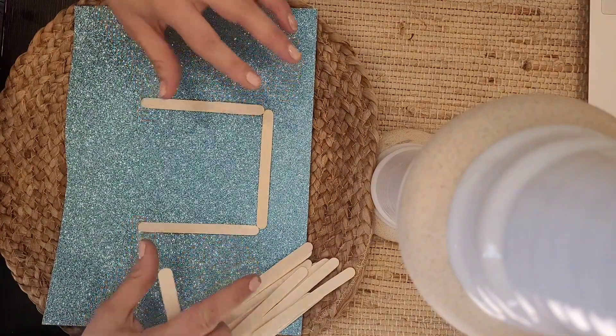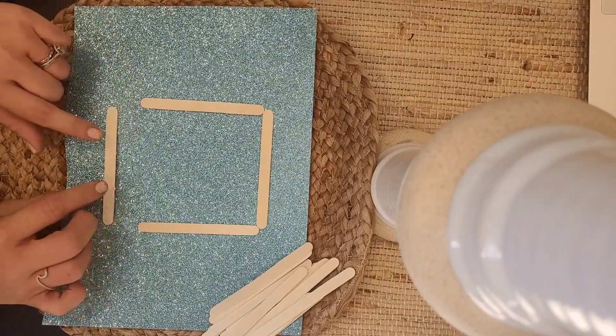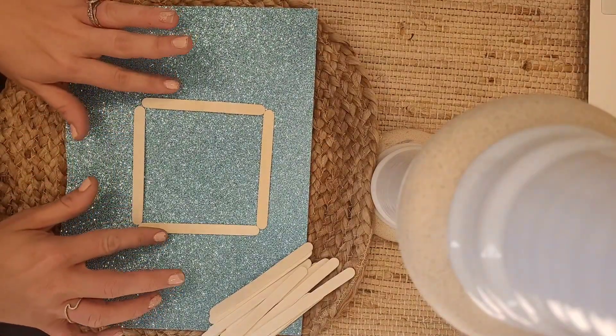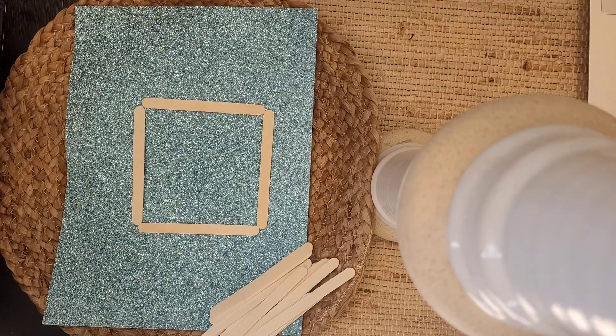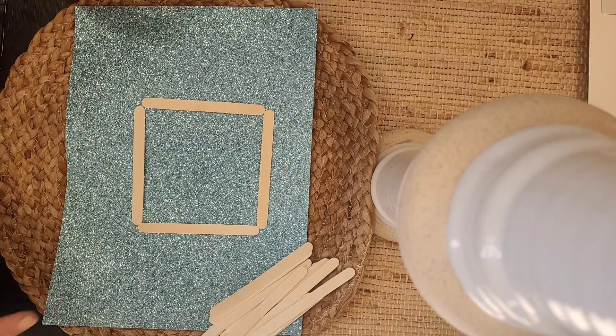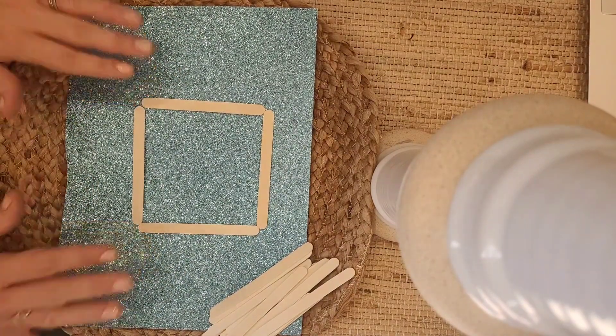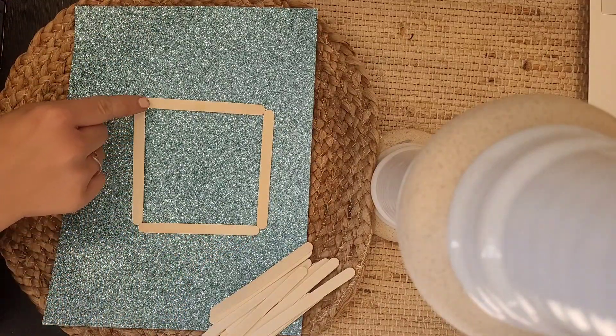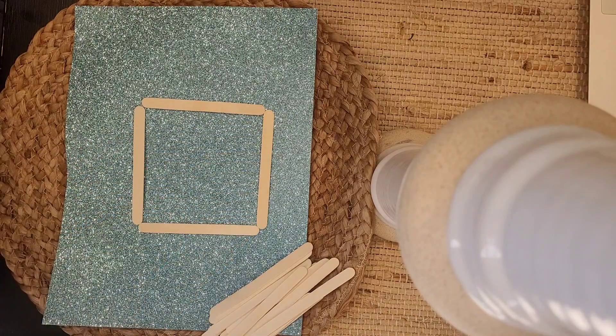So I'm going to take my third popsicle stick and put it down. I want to be nice and neat. And then I want to take my fourth line or popsicle stick or line segment if we want to be fancy mathematicians to create my square. Now notice it has one, two, three, four equal sides.